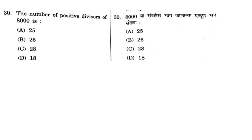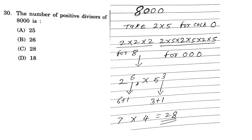The number of positive divisors of 8000 is — I have solved this and the correct answer is 28. If the solution has gone off screen, just go back a few seconds and watch it. The correct answer here is C, that is 28.